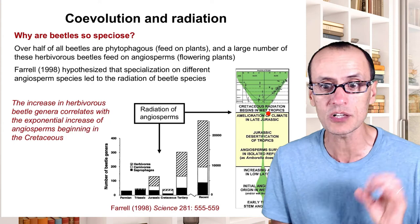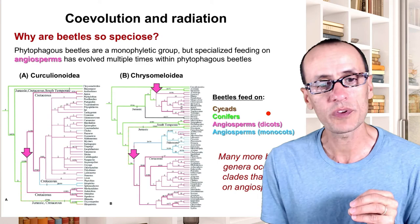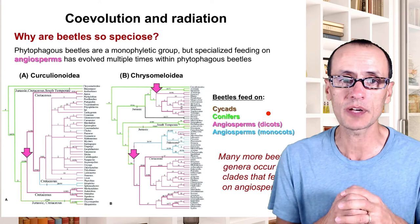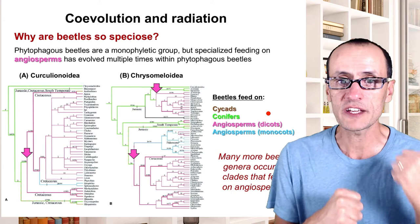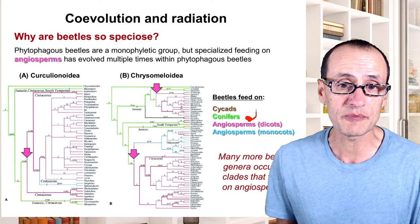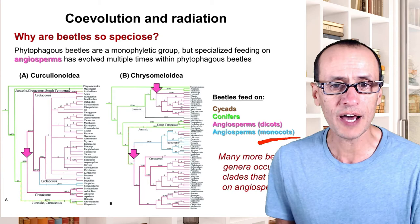What was interesting in Farrell's study is that he noticed that although beetles as a group are monophyletic — they all share the same common ancestor — they are not necessarily all specialized on feeding on angiosperms. Certain groups of phytophagous beetles feed on ancient evergreens like cycads. Some feed on conifers. Some feed on angiosperm dicots — the most diverse flowering plants. Some feed on monocots like lilies and onions.